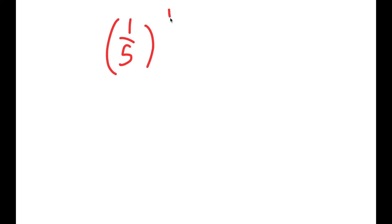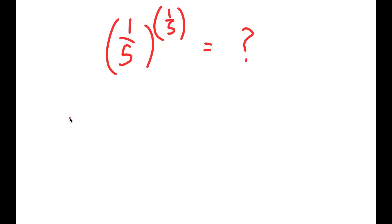In this video, I'm going to solve the problem 1 over 5 to the power of 1 over 5. To solve this problem, I'm going to first use the property: a to the power of 1 over n is equal to the nth root of a.